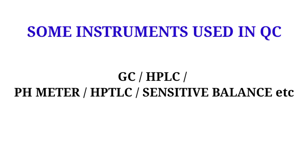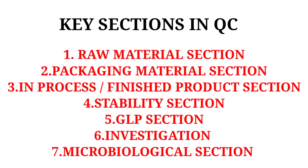Some instruments used in the quality control department include gas chromatography, HPLC, pH meter, HPDLC, and measuring balances. The complete list of instruments will be discussed in upcoming videos.